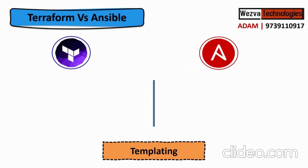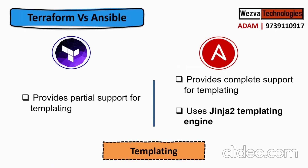Another key difference — and this time the benefit goes to Ansible — is that Ansible has a templating engine called Jinja, using which you can configure different machines with different applications. So if you have a requirement to configure different applications like Apache or Nginx, think of using Ansible because it has a better way to handle and support templating. Terraform doesn't have much templating support, though it does support it in a limited way.